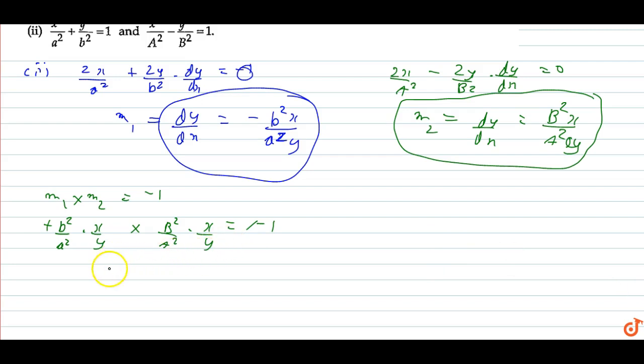So x-square upon y-square equals small a-square times capital A-square upon small b-square times capital B-square. This gives us an expression relating x and y to the four semi-axes.